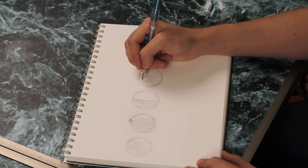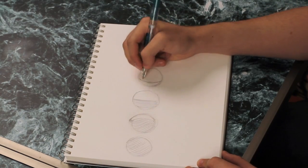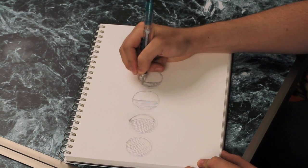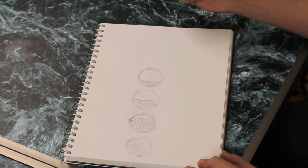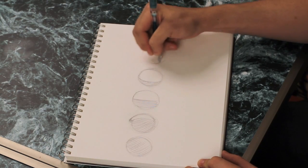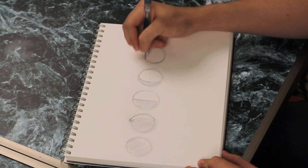Next we have the waxing gibbous, which is a sliver of darkness now. The majority is now the moon. Then from that we have the full moon, which is just going to be all moon.